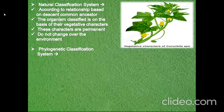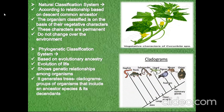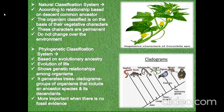Next we will talk about Phylogenetic Classification System. It is based on evolutionary ancestry or evolution of life. It shows genetic relationships among organisms which are classified. It generates a phylogenetic tree or cladogram, which is groups of organisms that include an ancestor species and its descendants. It is more important when there is no fossil evidence.